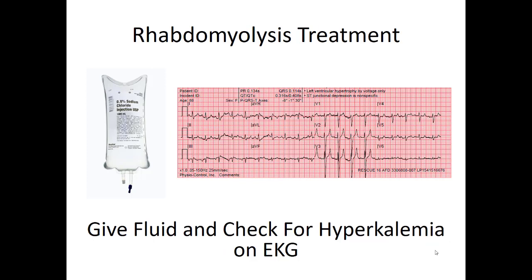What we do for rhabdo is try to flush those proteins right out of the kidneys — we give a lot of fluid until the urine becomes clear, because typically in bad rhabdomyolysis the urine will look tea- or coffee-colored due to kidney injury. The big thing we worry about in the pre-hospital setting is hyperkalemia. Get a 12-lead if you're suspecting rhabdo and look for peaked T waves in the anterior leads, particularly V2 and V3, and treat in the right clinical setting.